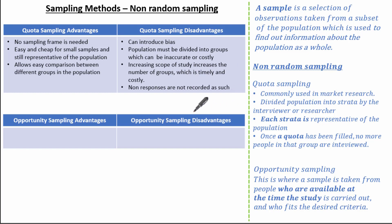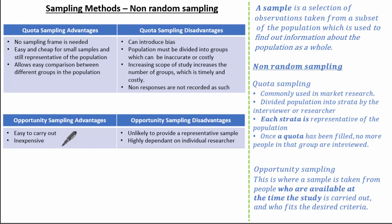Looking at the advantages of opportunity sampling: it's easy to carry out and inexpensive. The disadvantages are that it's unlikely to provide a representative sample, and it is highly dependent upon the individual researcher.